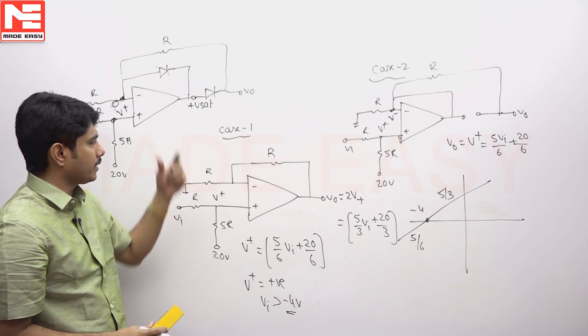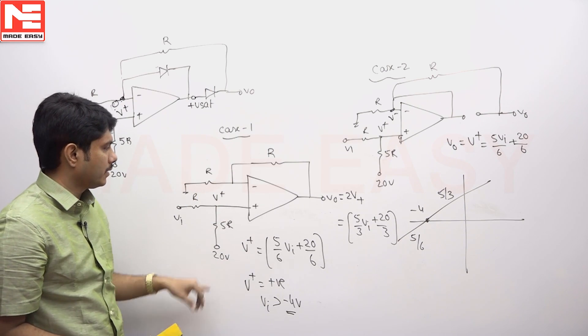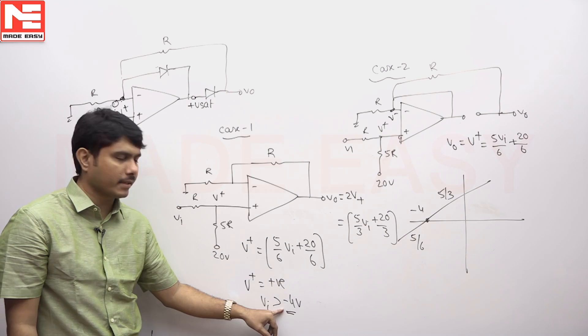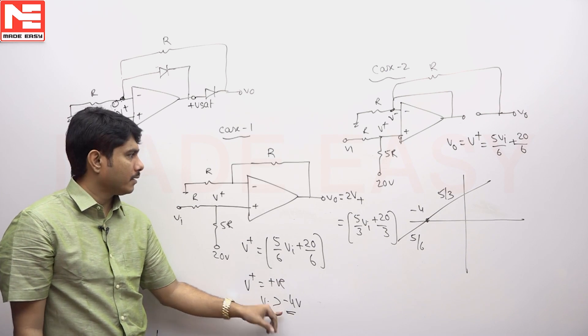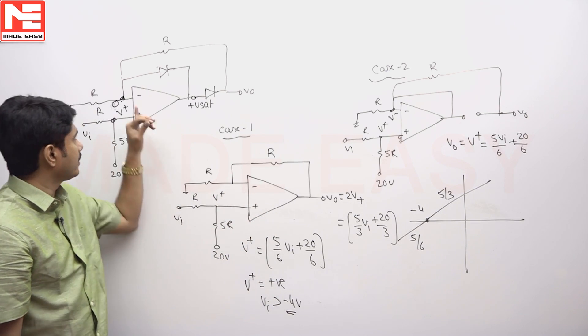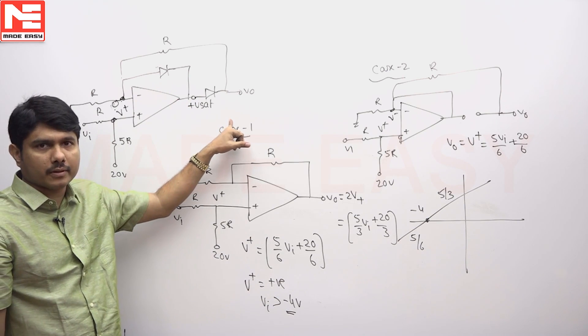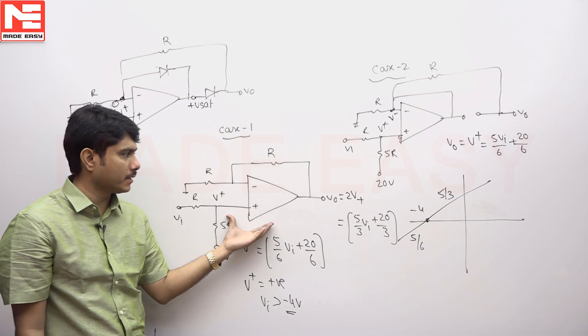So by this knowledge, we're expecting case 1: VI is greater than minus 4. This is the situation happening - D1 is off, D2 is on. So the model can be replaced like this.